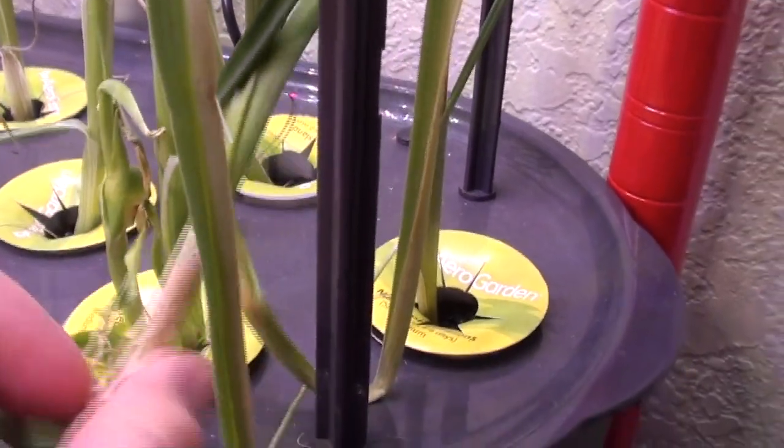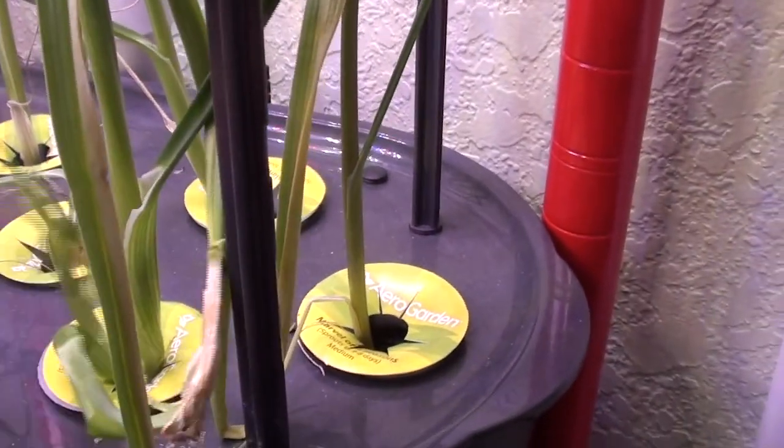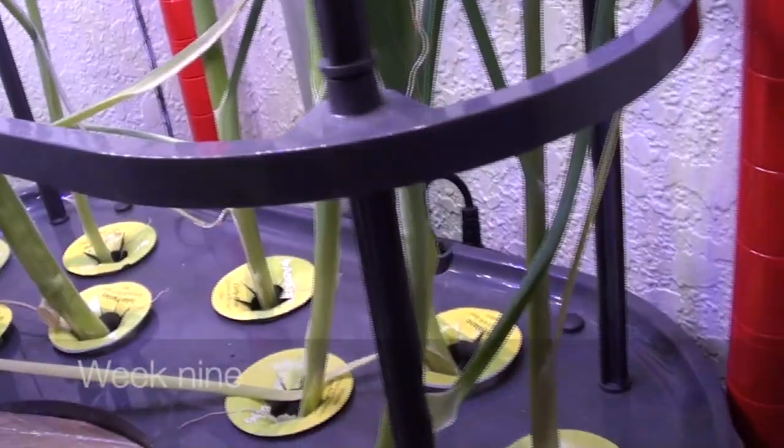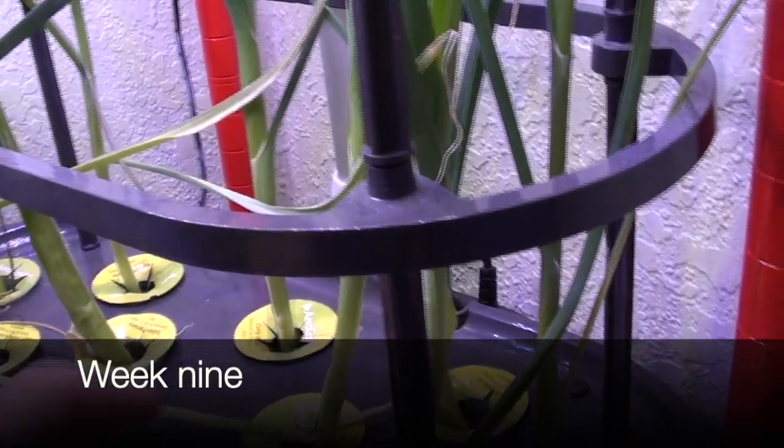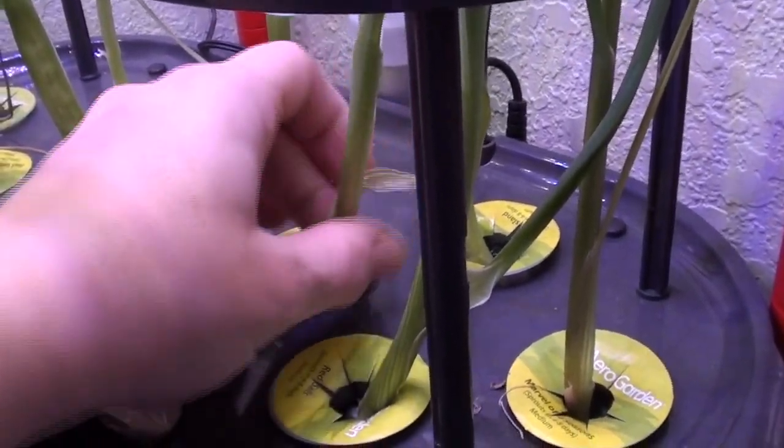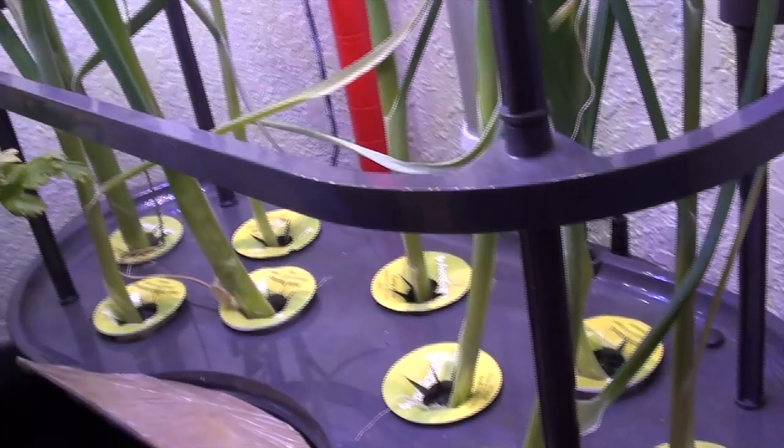For the longest time, the leeks were very onionesque in their growth. They did finally get their characteristic flat leaves. Something I noticed as they got bigger, the outer leaves would dry out and husk off. So there was a little maintenance of going around and pulling dried outer leaves off to prevent them from just falling off and creating a mess.